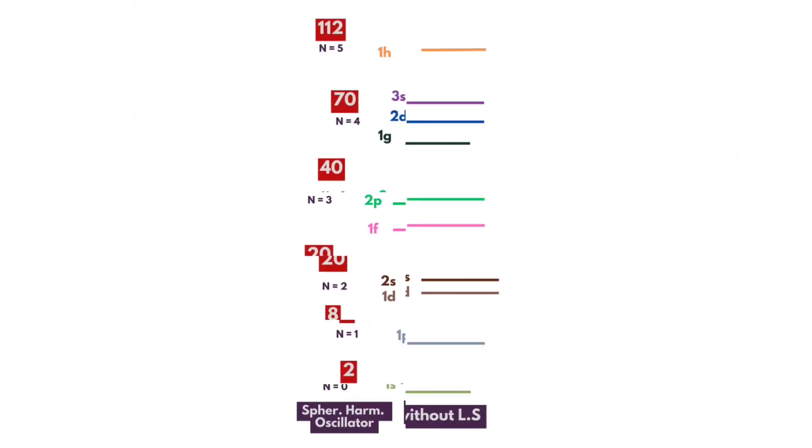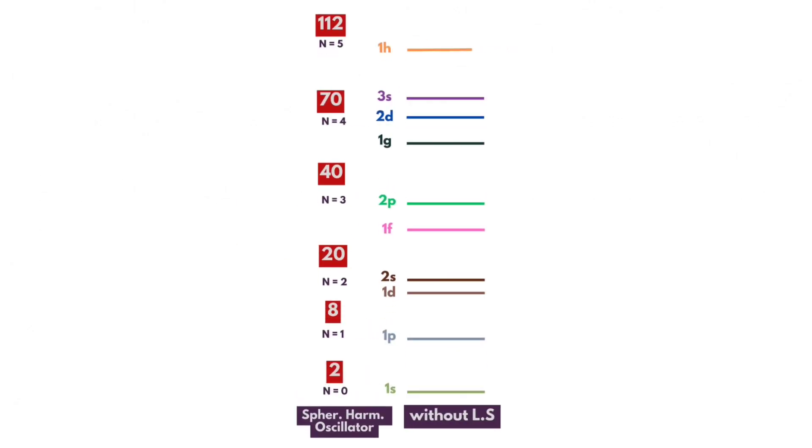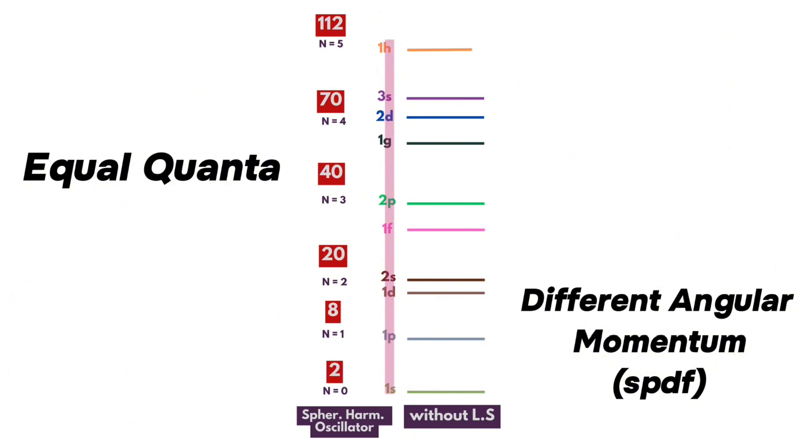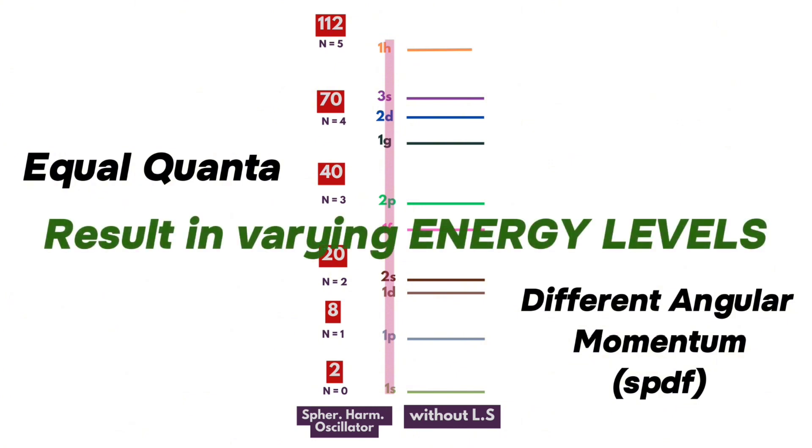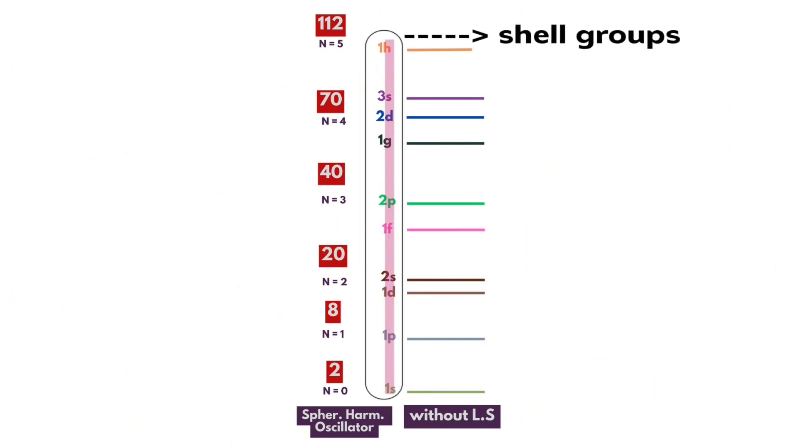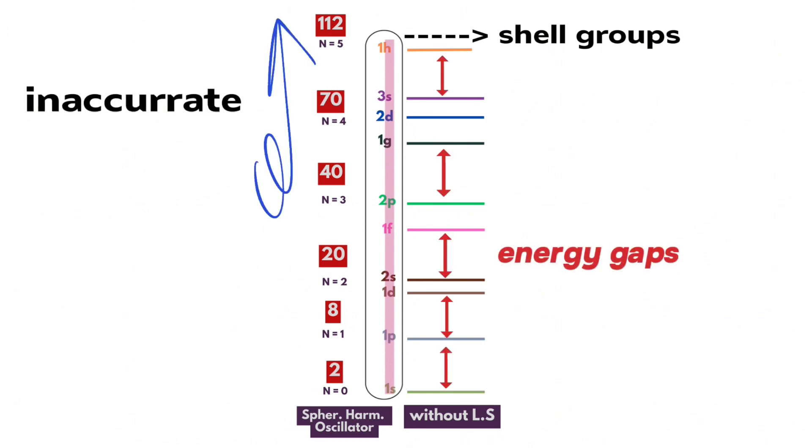We consider that in actual potential states, equal quanta but different angular momentum result in varying energy levels. This leads to the existence of shell groups with significant energy gaps, preventing accurate prediction of magic numbers beyond 20. But it does not mean that the model is completely wrong. There is a missing piece.